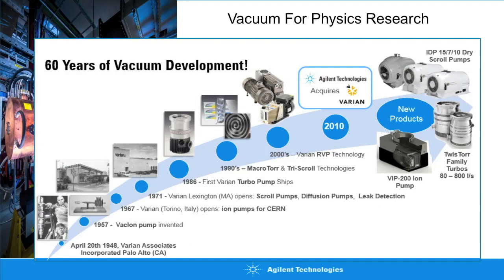In 2010, the Varian company was acquired by Agilent Technologies, and since then there's been a real proliferation of new products under the Agilent banner produced by what was the vacuum division of Varian. Congratulations to Varian for achievements over the last 70 years, 60 years since the first ion pumps were invented, and last year was the 50th year of the Torino facility — Varian's research and development site in Torino, Italy.